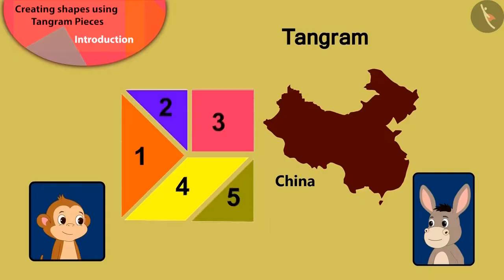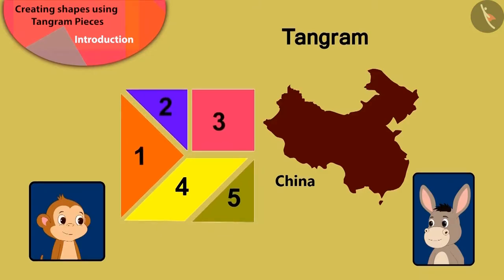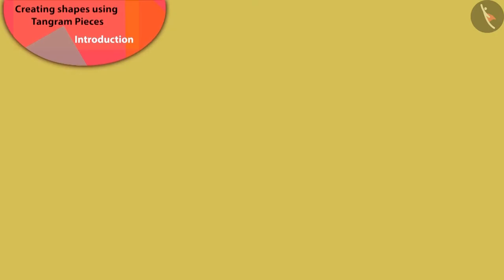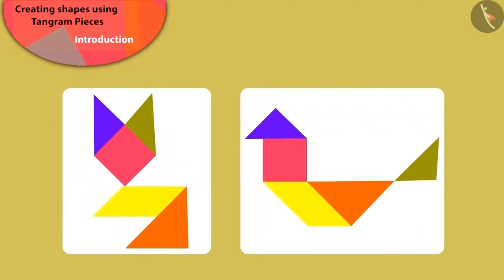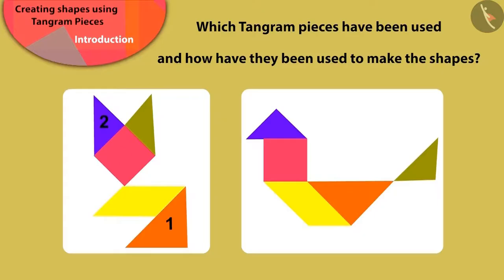With just these five pieces of tangram, we can make various different shapes. Children, here we can see both the shapes made by Babban. Can you say which pieces of the tangram have been used to make these shapes? Well done, children — you have identified them perfectly!